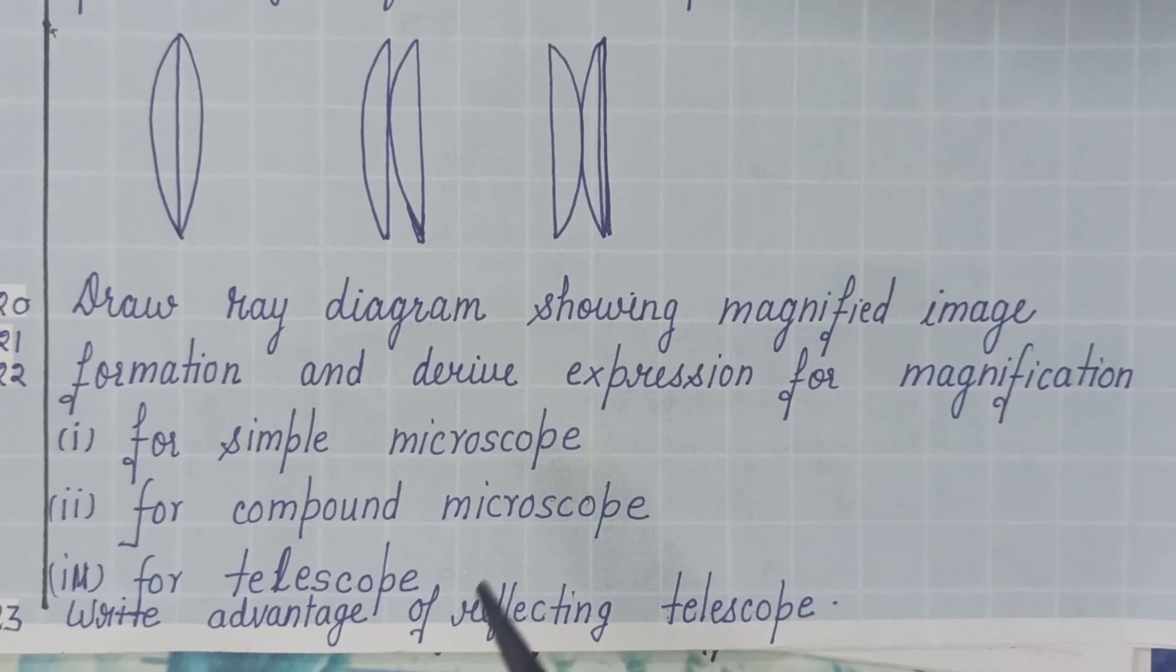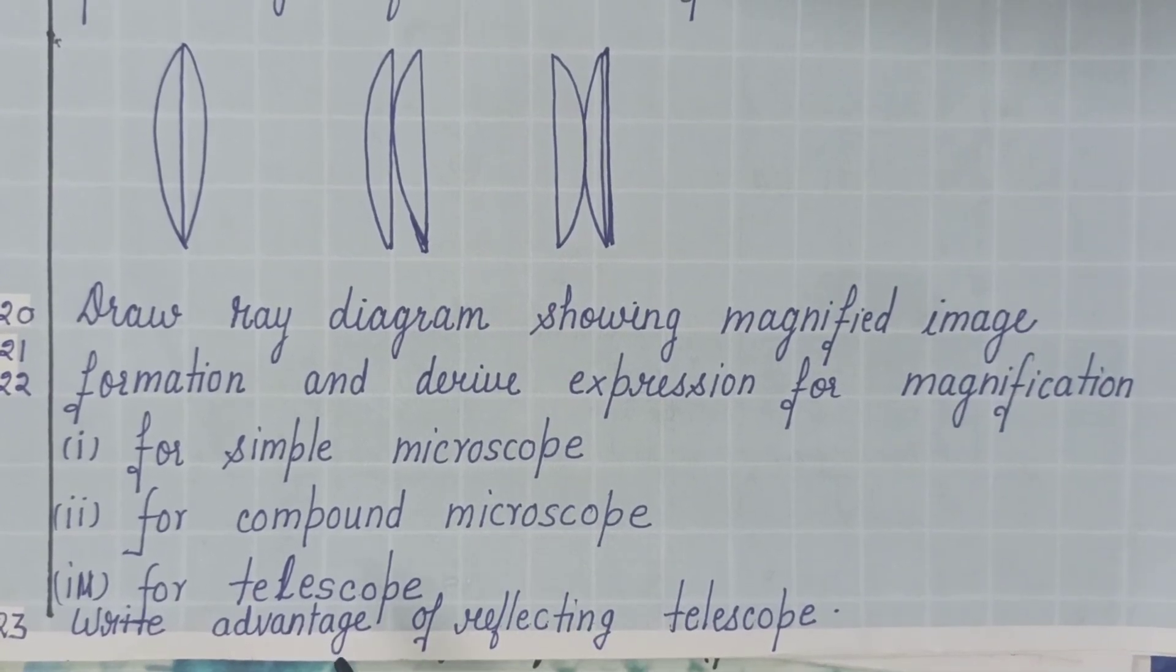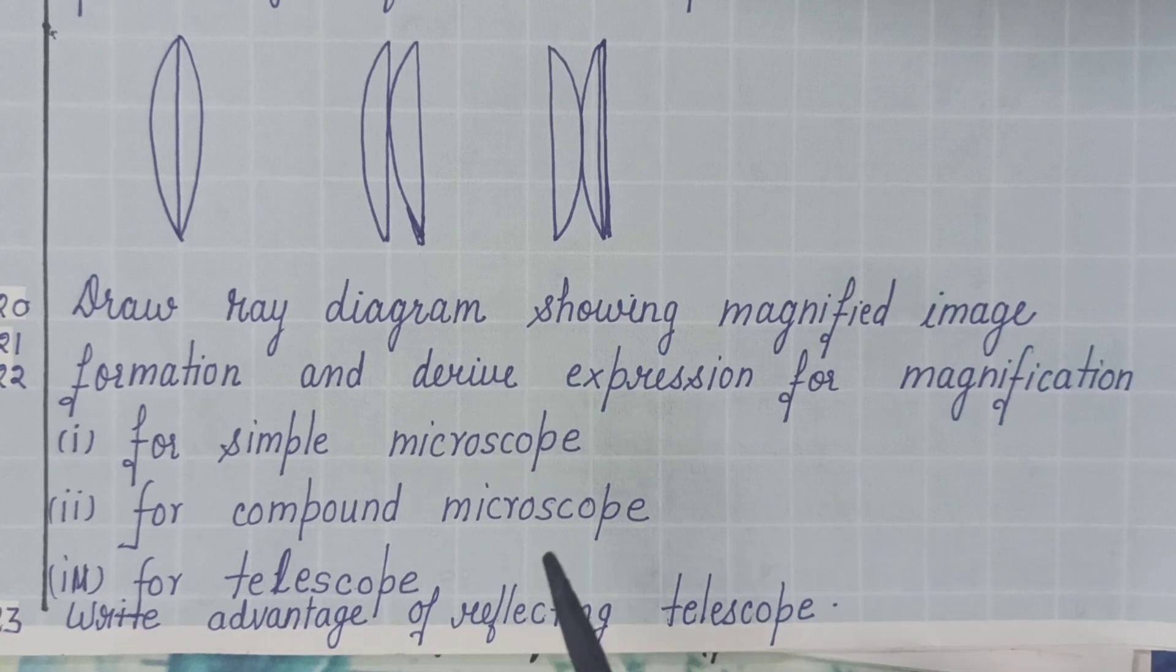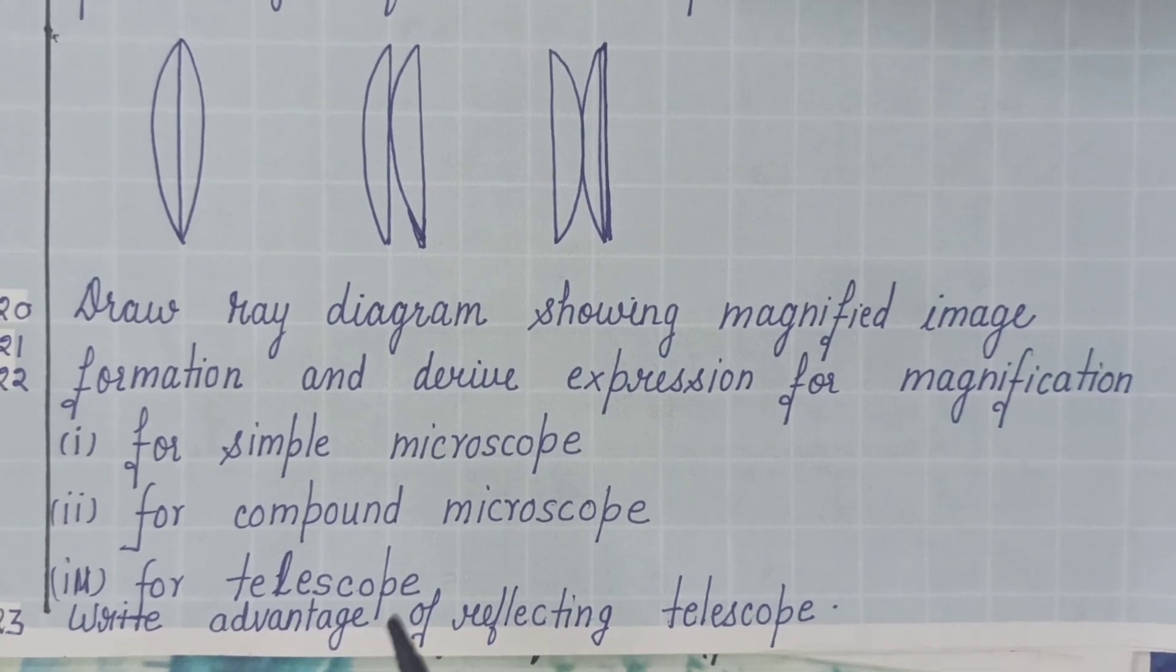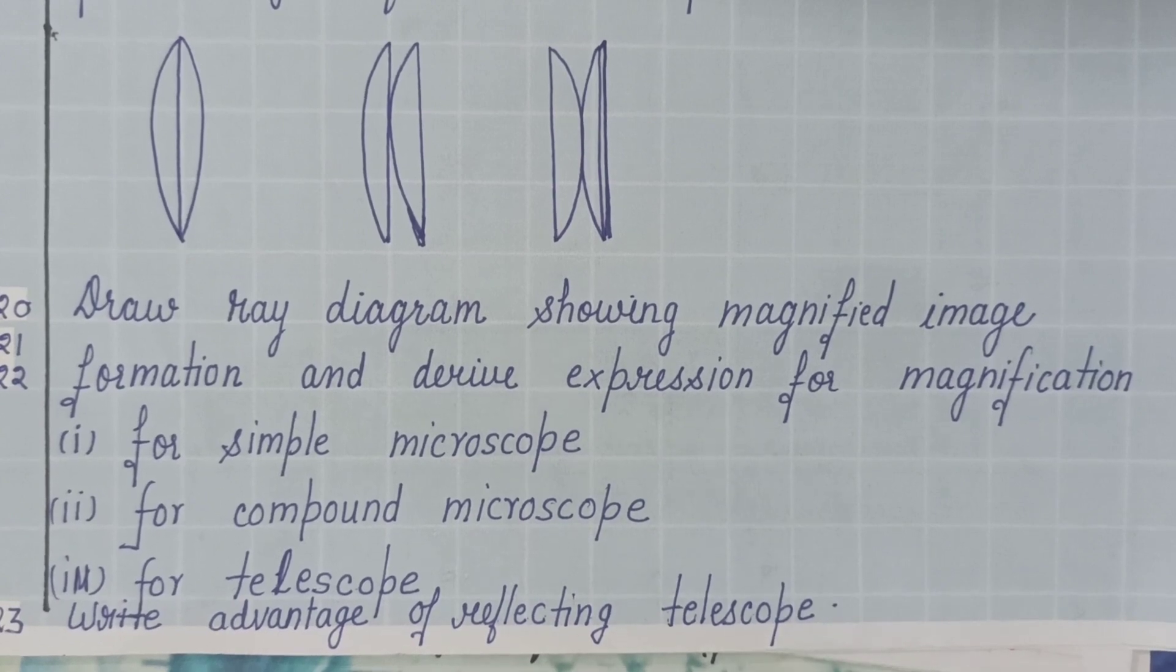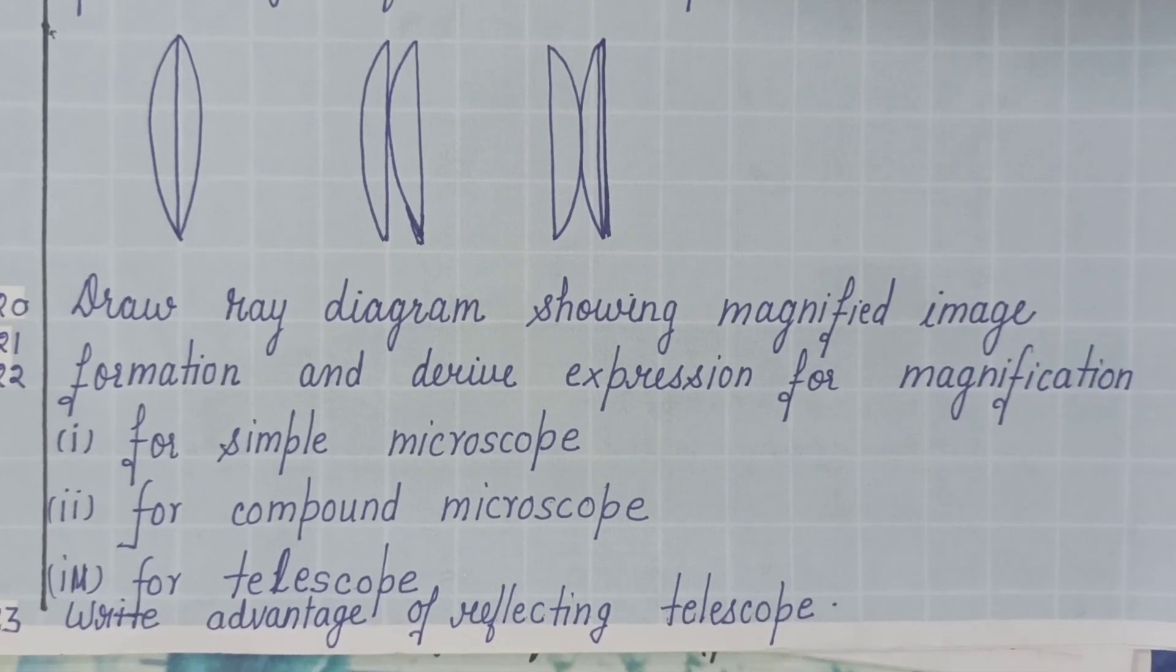And in all the three diagrams, there are image formations at infinity and at least distance of distinct vision. So in both the cases, both the ray diagrams are same. But you should learn the little difference between the two when the final image is formed at infinity and when the final image is formed at least distance of distinct vision.